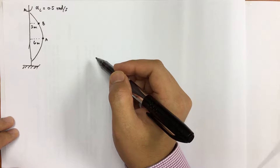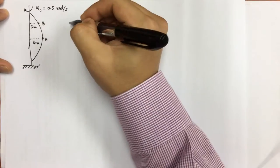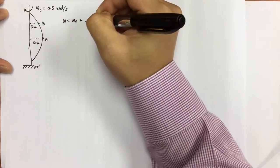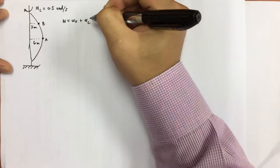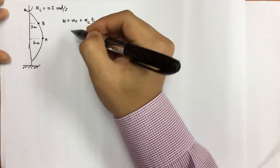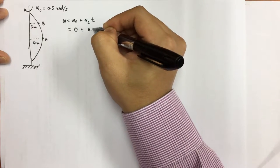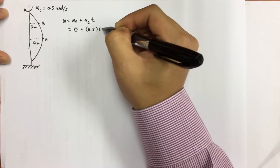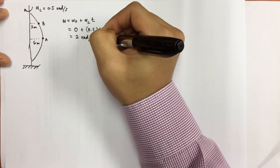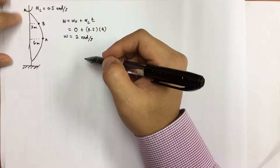We begin by finding the angular velocity at T equals 4 seconds. We use the velocity equation: omega equals omega-naught plus angular acceleration times T. Since it starts from rest, omega equals 0 plus 0.5 times 4, which gives us 2 radians per second. This is the angular velocity of the whole object.